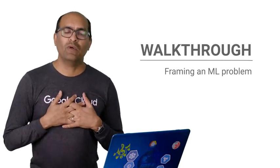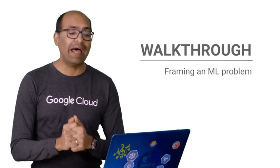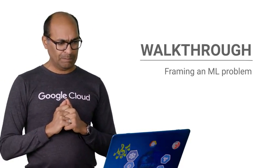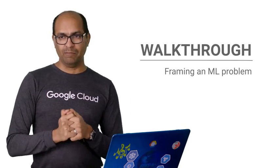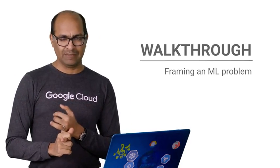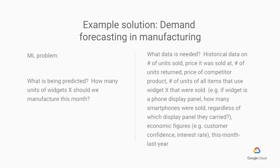In my case, one of the use cases I picked was demand forecasting in manufacturing. We cast it as a machine learning problem and asked: what is being predicted? Because we are doing demand forecasting in manufacturing, what is being predicted is how many units of Widget X should be manufactured this month. For example, if you are making phone display panels, how many panels of a 4-inch screen or a 6-inch screen should be manufactured this month?